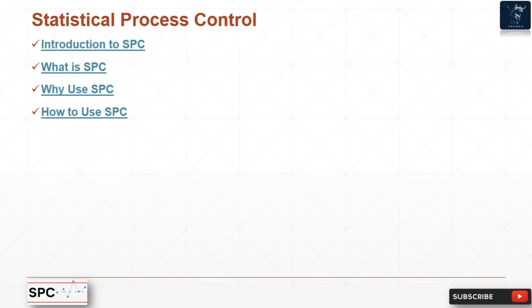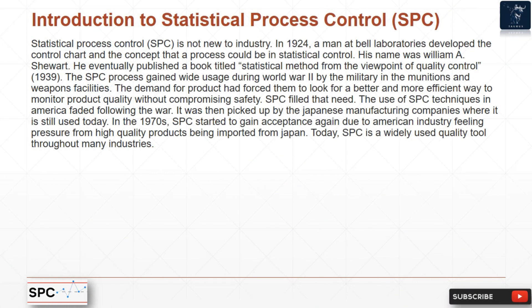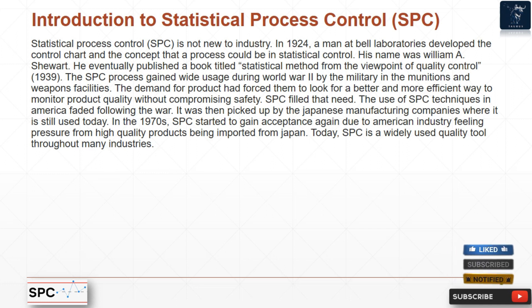Introduction to Statistical Process Control (SPC): what is SPC, why use SPC, and how to use SPC. SPC is not new to industry. In 1924, a man at Bell Laboratories developed the control chart and the concept that a process could be in statistical control. His name was William A. Shewhart, and he eventually published a book titled 'Statistical Method from the Viewpoint of Quality Control' in 1939.